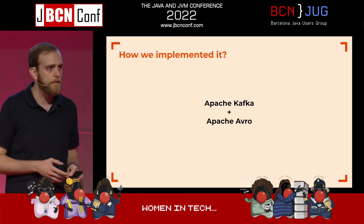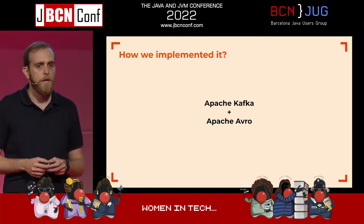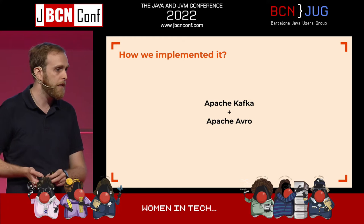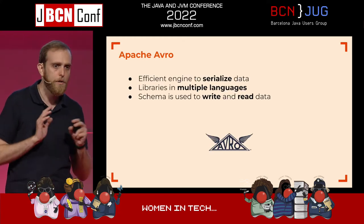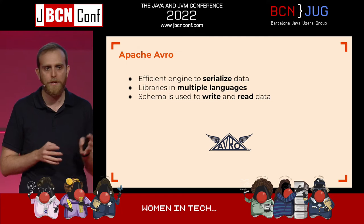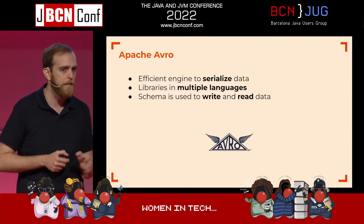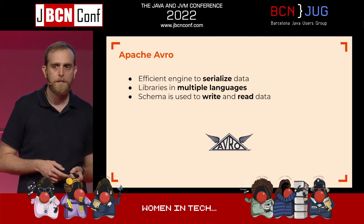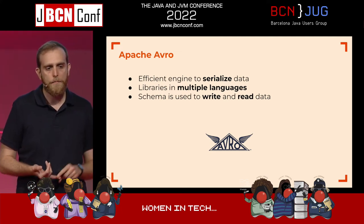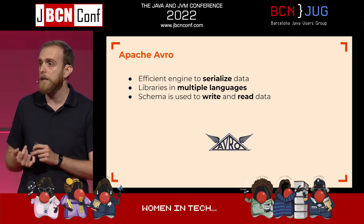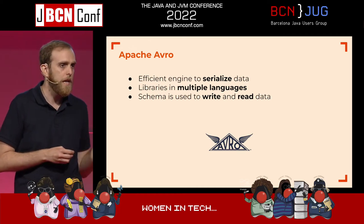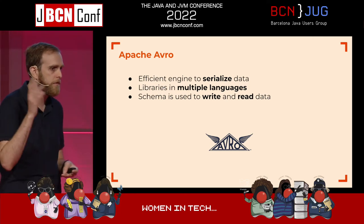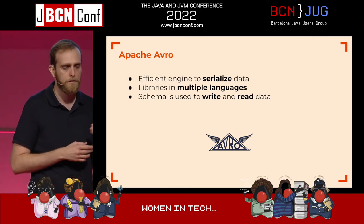We implemented the system with two main technologies: Apache Kafka and Apache Avro. Apache Avro is an efficient engine to serialize data. There are libraries in multiple languages — you can use it from the JVM, PHP, Golang, and more. Differing from JSON, where there's no schema and you can write whatever you want in a string, in Avro you need schemas to write and read data.